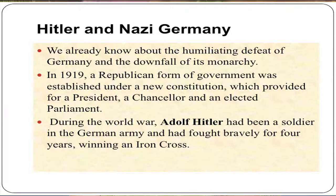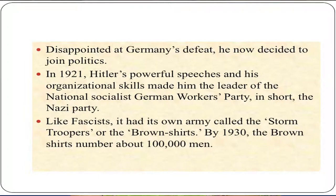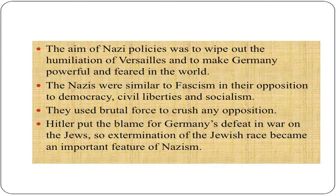You are already familiar about the humiliating defeat of Germany and the downfall of its monarchy. In 1919, a republican form of government was established under a new constitution which provided for a president, a chancellor, and an elected parliament. Adolf Hitler had been a soldier in the German army and had fought bravely for four years, winning an Iron Cross. Disappointed at Germany's defeat, he now decided to join politics. In 1921, Hitler's powerful speeches and organizational skills made him the leader of the Nationalist Socialist German Workers' Party — in short, the Nazi Party. Like the Fascists, it had its own army called the Storm Troopers, or the Brownshirts. By 1930, the Brownshirts numbered about one lakh men. The aim of the Nazis was to wipe out the humiliation of Versailles and to make Germany powerful and feared in the world. The Nazis were similar to Fascism in their opposition to democracy, civil liberties and socialism, and used brutal force to crush any opposition.